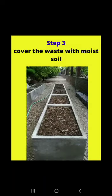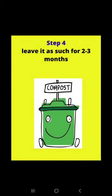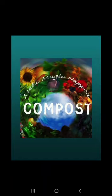Step three: cover the waste with moist soil. When your compost bin or compost pit is completely full of waste, cover it with soil and pour a little water on top so that it stays moist and slightly wet. After this, step number four: leave it as such for two to three months. For two to three months, without touching or disturbing the compost pit or bin, just leave it as it is.